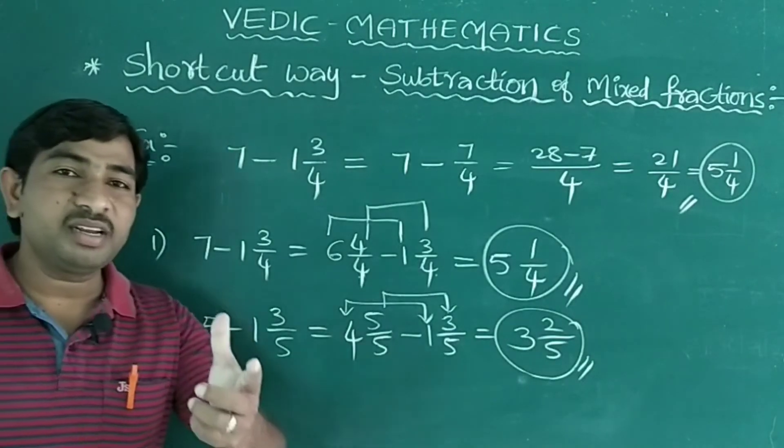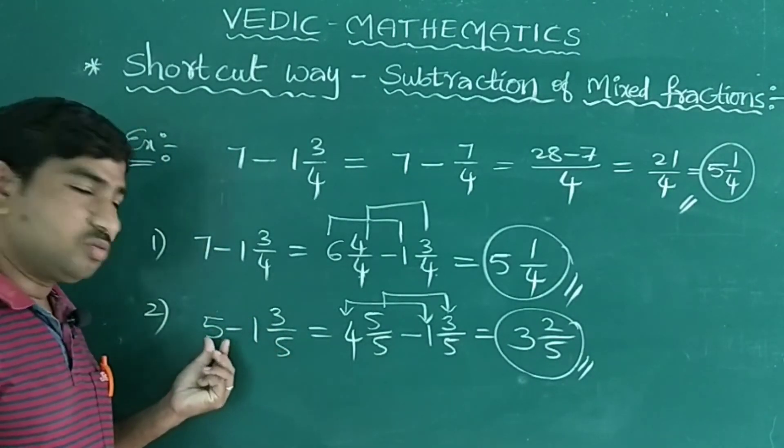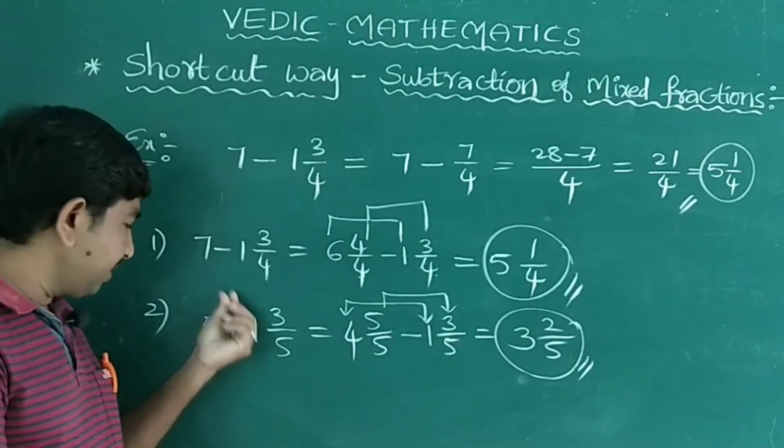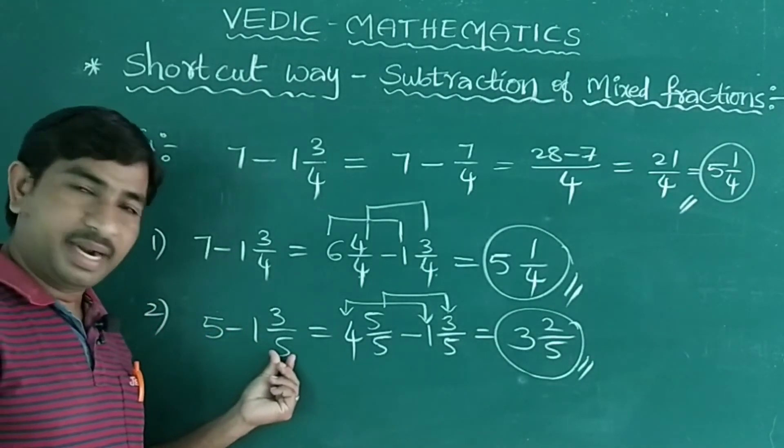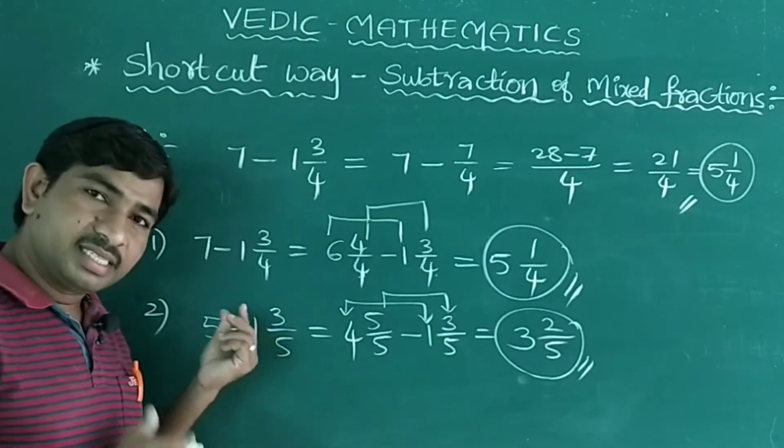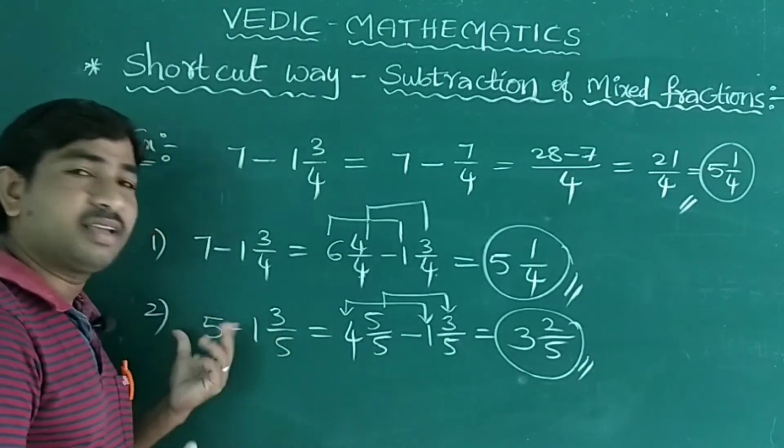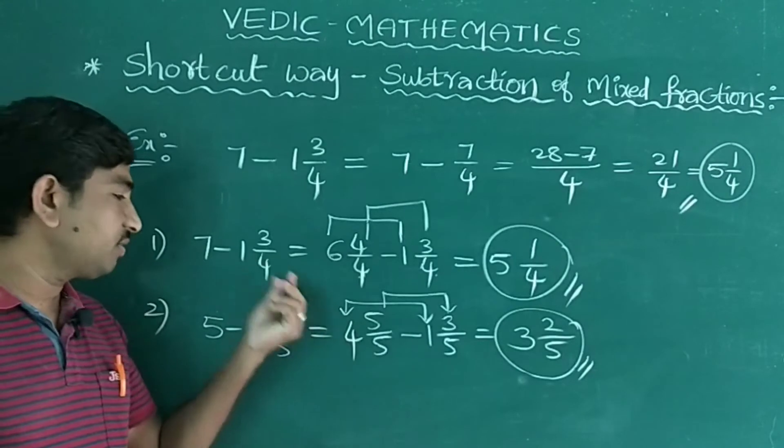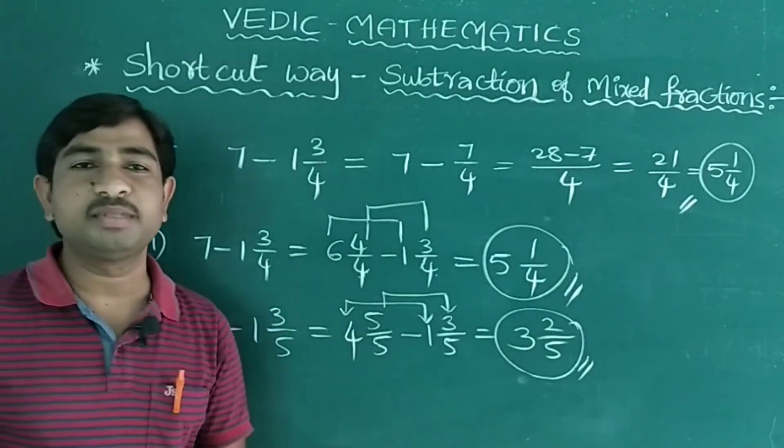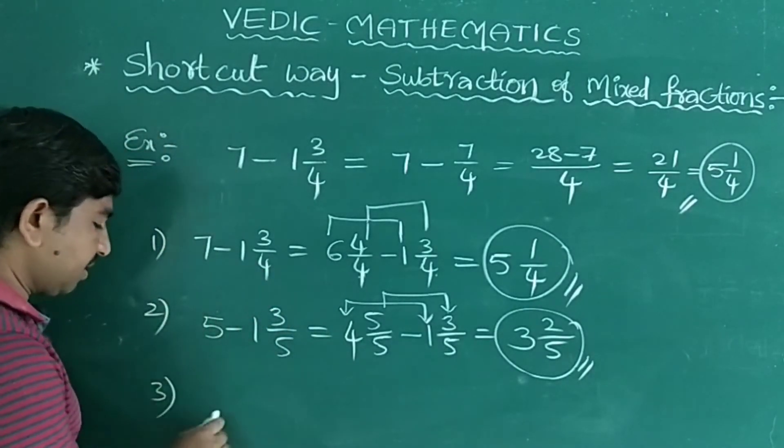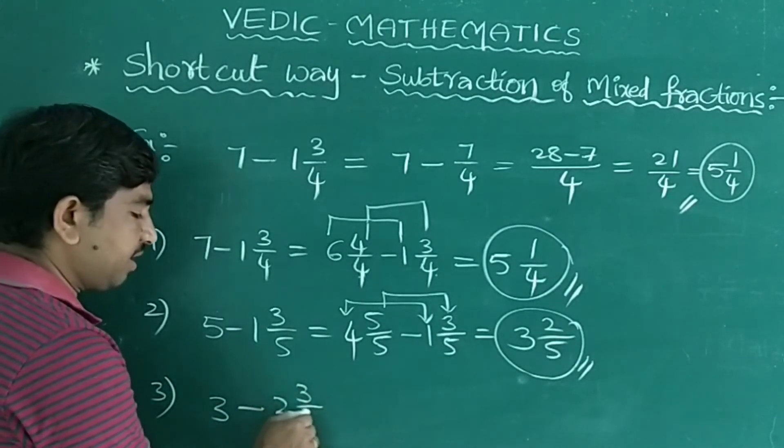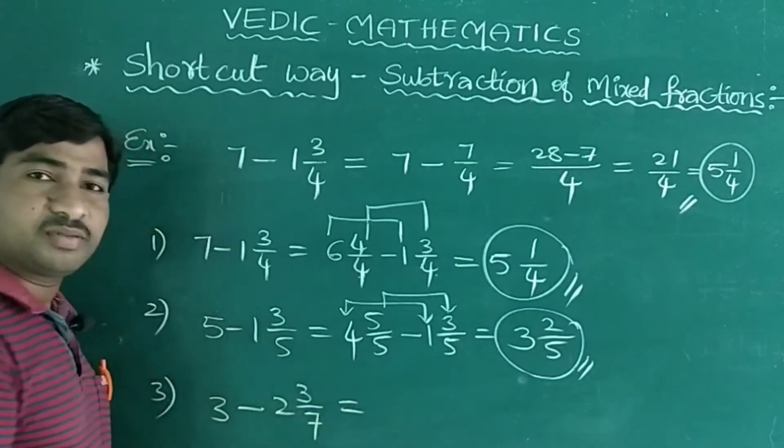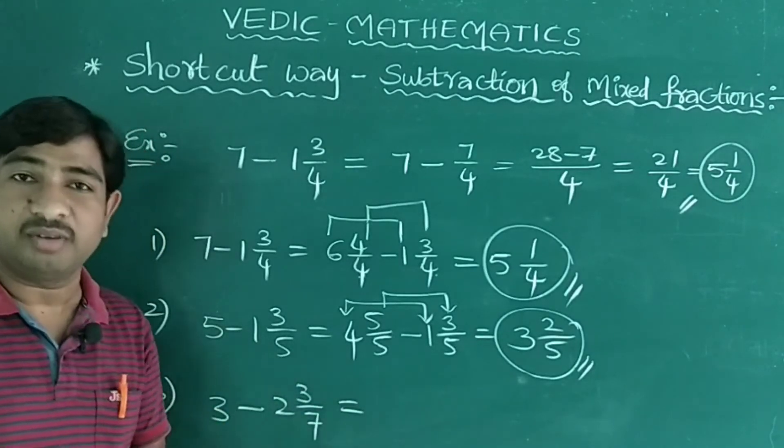If you observe here, what is the trick I am using? To write or to convert this given number into the mixed fraction, you can choose what the denominator is given here. Depending on this denominator, you can convert the given number into the form of the denominator. So see, observe. Now, suppose for example, 3 minus 2 3/7. Suppose for example, this 3, how to convert that?